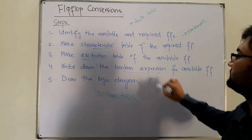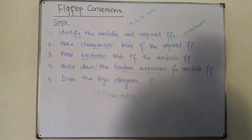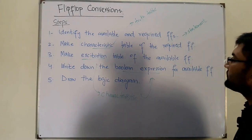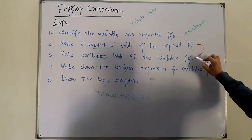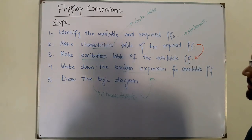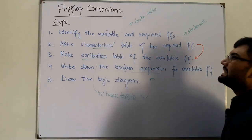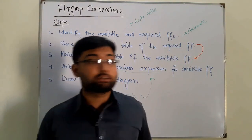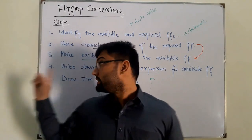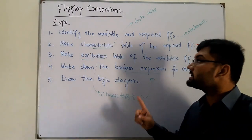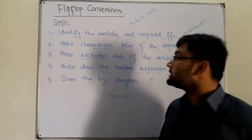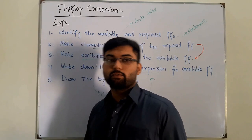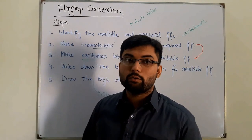Finally, you write down the Boolean expression for the available flip-flop, which means making changes in the characteristic table of the required flip-flop using the excitation table of the available flip-flop. We will start the actual conversions from the next videos. You need to know these steps and the characteristic and excitation tables of each flip-flop before moving on.